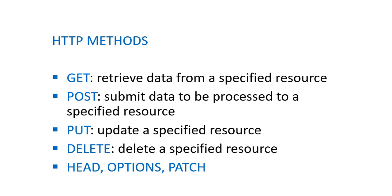HTTP has different methods. Number one is GET — the purpose of this is to retrieve data from a specified resource. We also have POST, meaning we submit data to be processed to a specified resource. GET and POST are basically the two methods used on a form. Then we also have PUT — the PUT method is an update to a specified resource. And we also have DELETE — to delete a specified resource. There are also three other methods: HEAD, OPTIONS, and PATCH — but we're not going to go into detail on those. We will be focusing only on GET, POST, PUT, and DELETE.